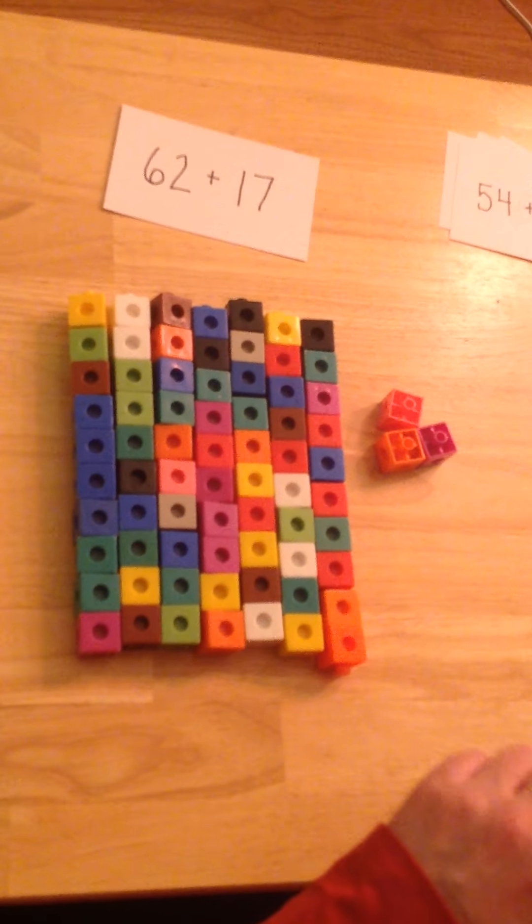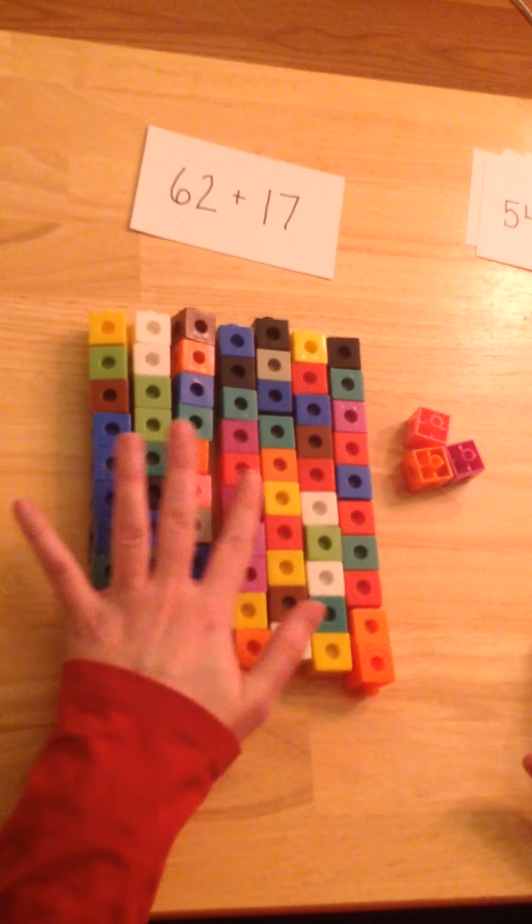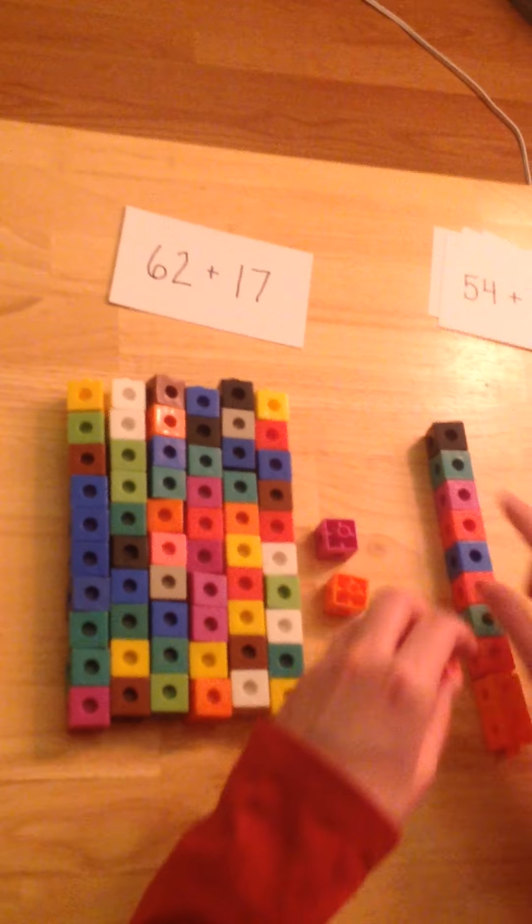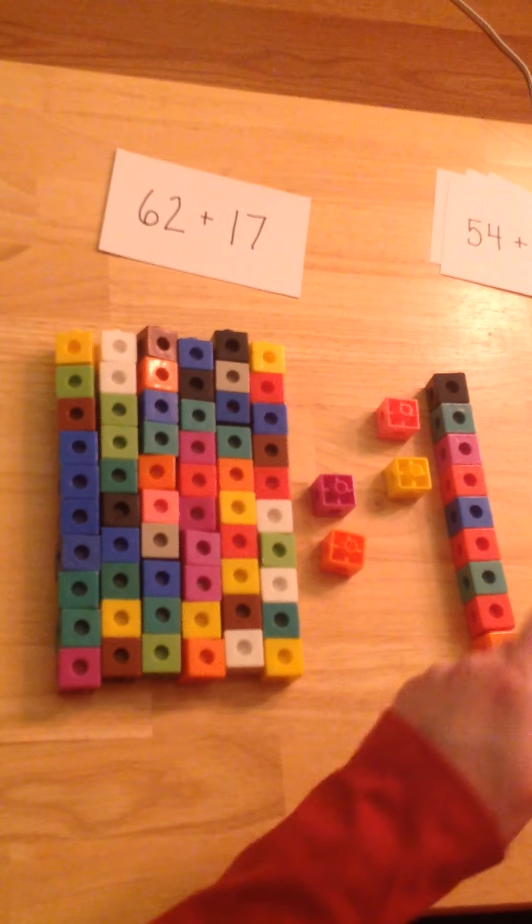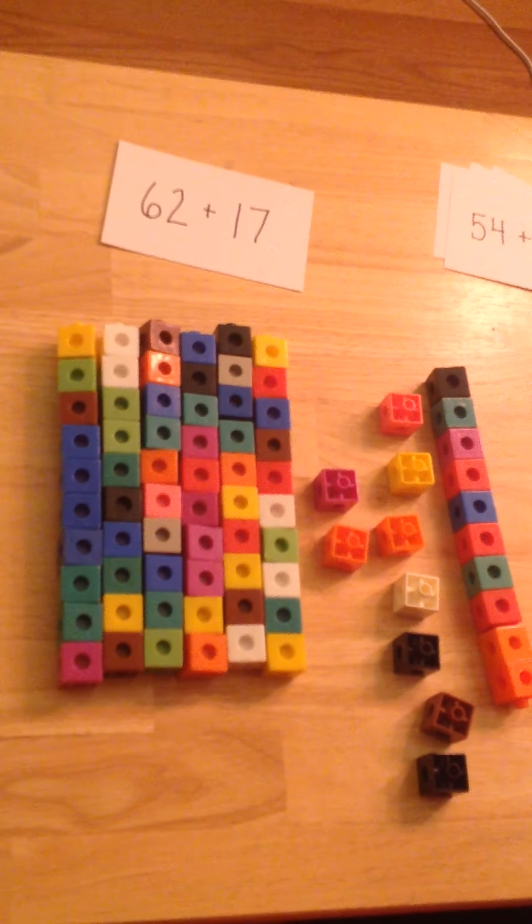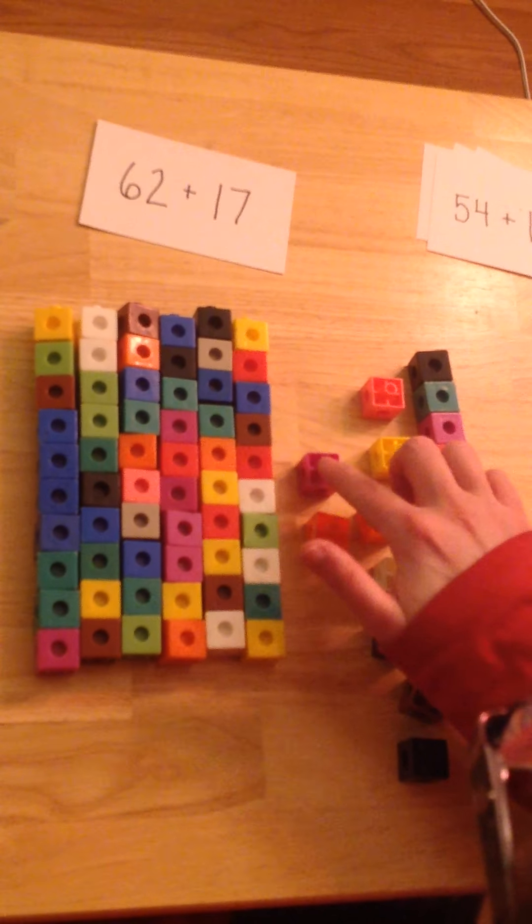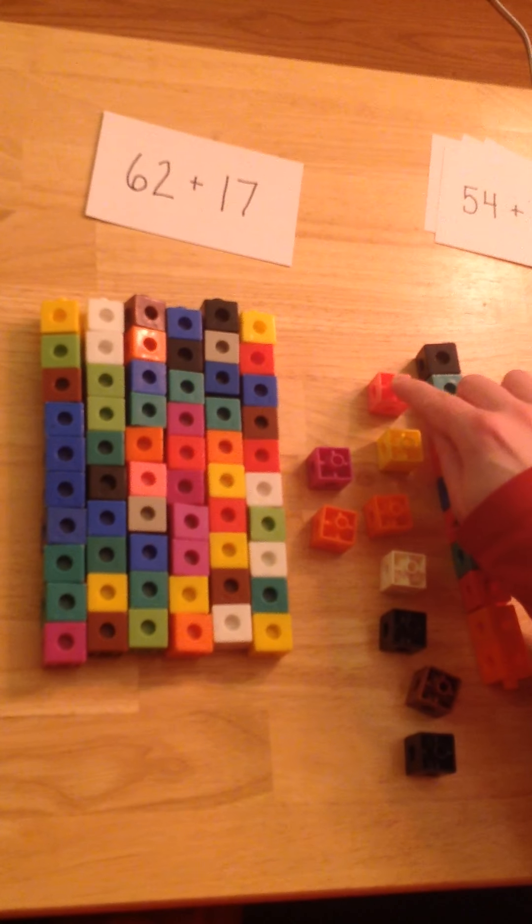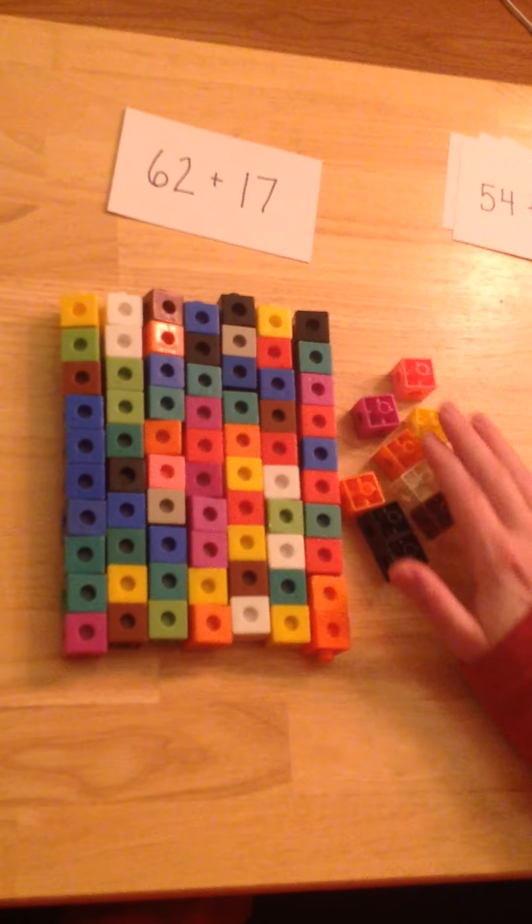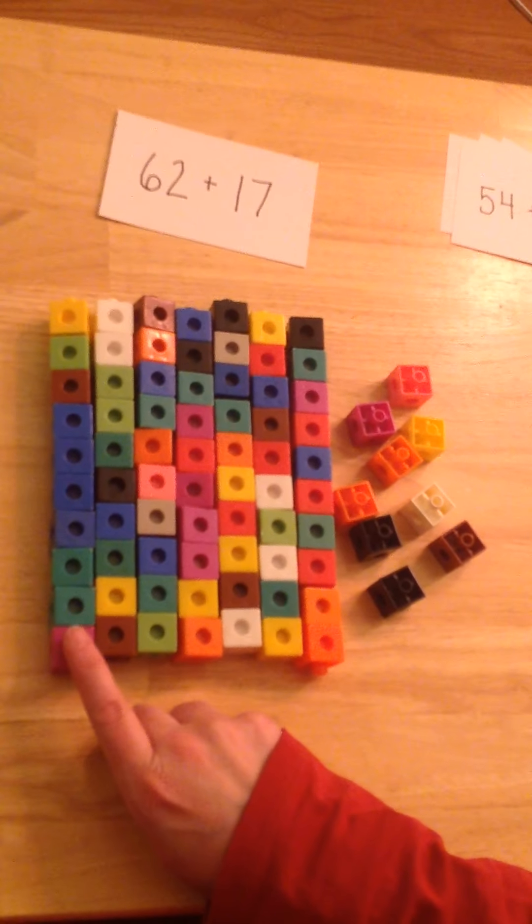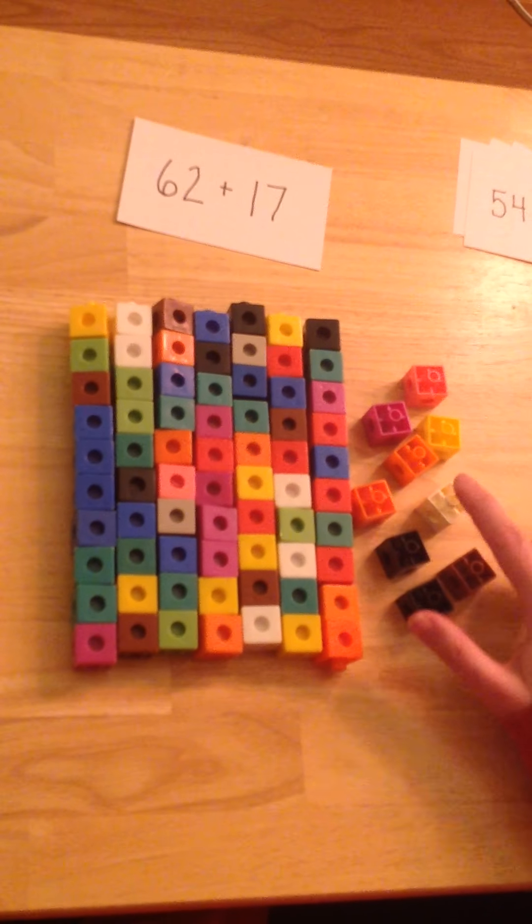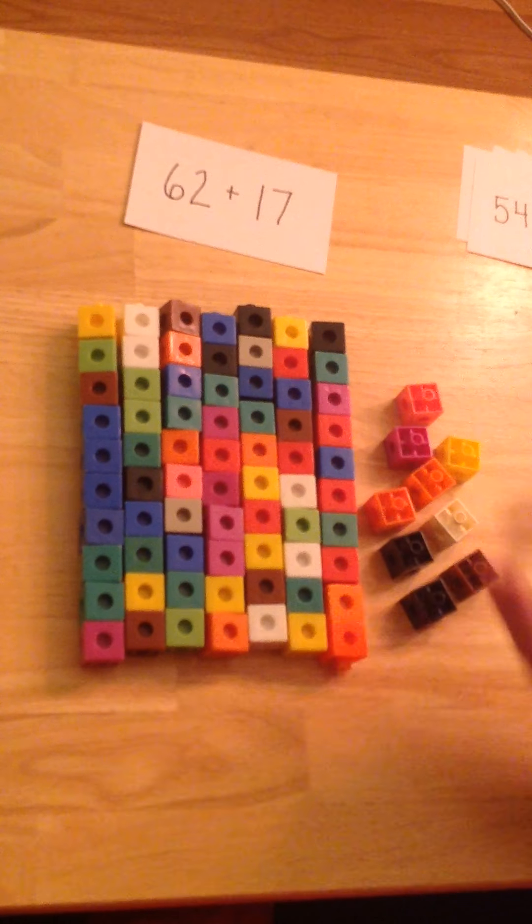Next we're going to solve 62 plus 17. 10, 20, 30, 40, 50, 60, 2 and a 10, 11, 12, 13, 14, 15, 16, 17. I'm gonna count my ones first. 1, 2, 3, 4, 5, 6, 7, 8, 9. Did I get to 10? I did not, so I don't have to make a new 10, but I'm gonna put this 10 with my 10s and this will be my leftover ones. And 62 plus 17 is 10, 20, 30, 40, 50, 60, 70, 71, 72, 73, 74, 75, 76, 77, 78, 79.